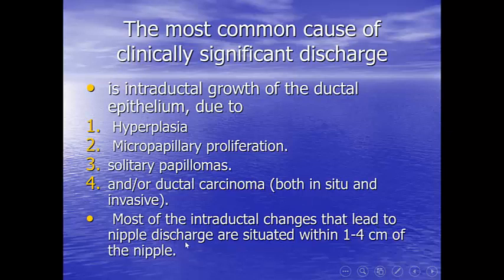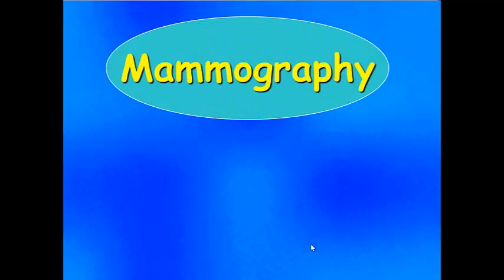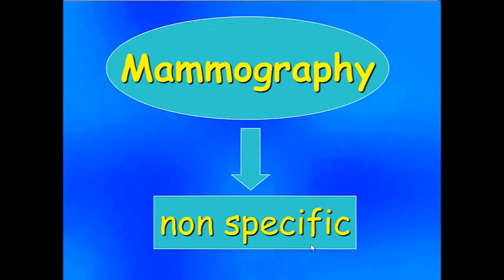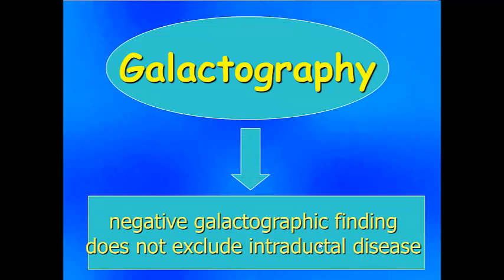Most of the intraductal changes that lead to nipple discharge are situated within 1–4 cm from the nipple. Does mammography have a role? Yes, but it is non-specific. Mammography is important especially in detecting calcifications in early ductal carcinoma in situ, but mammographic findings in intraductal disease are usually non-specific. Regarding galactography, it is an underused procedure, not used nowadays at all. With advances in ultrasound, ultrasound substitutes this modality. Also, negative galactographic findings do not exclude intraductal disease, and galactography cannot differentiate between inspissated secretions and a mass. And here came the ultrasound.